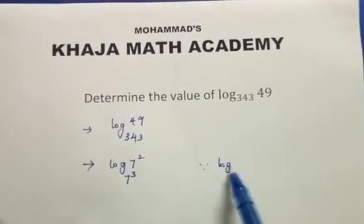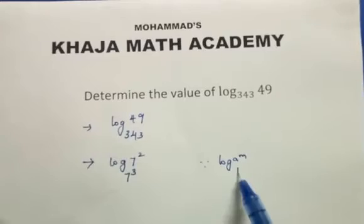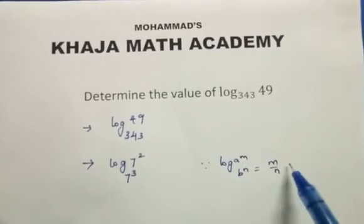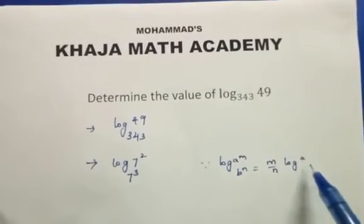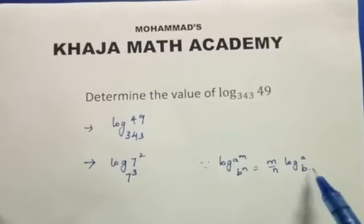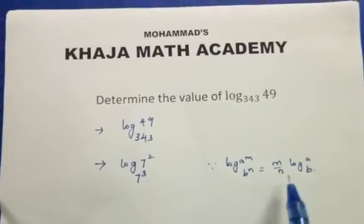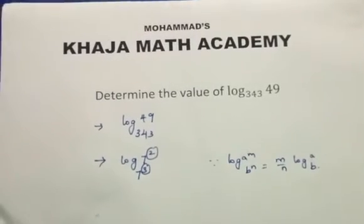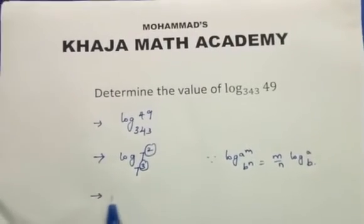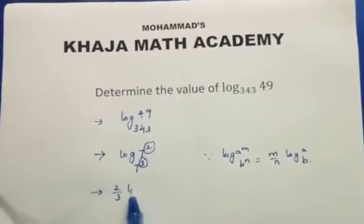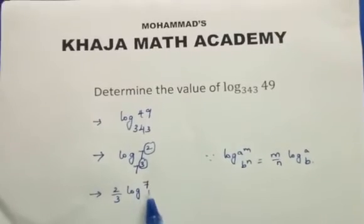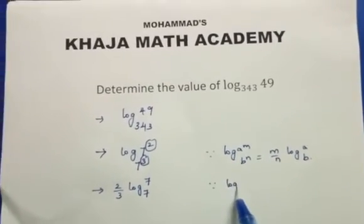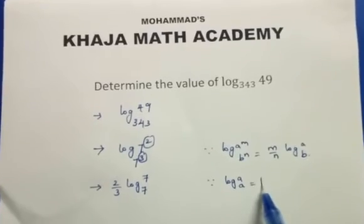It is in the form of log a power m to the base b power n, which equals m by n times log a to the base b. Applying this formula, in place of m we have 2 and in place of n we have 3, giving us 2 by 3 times log 7 to the base 7.